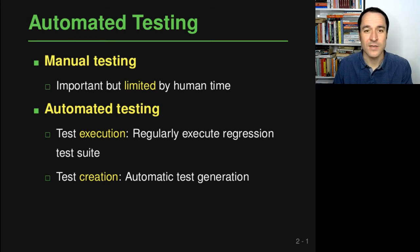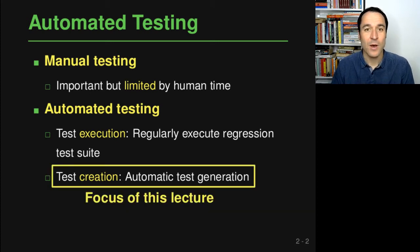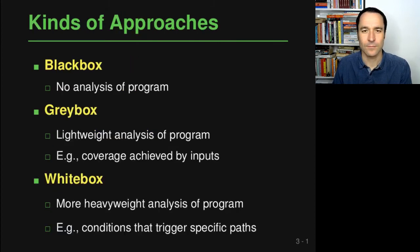This is where automated testing comes into play because it tries to reduce the human burden involved in testing. The two ways of doing this automation: one is to automate the test execution, which means someone has written a test, for example a unit test, and then this test is regularly executed as part of a regression test suite. The form of automated testing that I want to talk about here is about the test creation, so the idea is that you're not even writing the test yourself but you have a tool that is automatically generating tests.